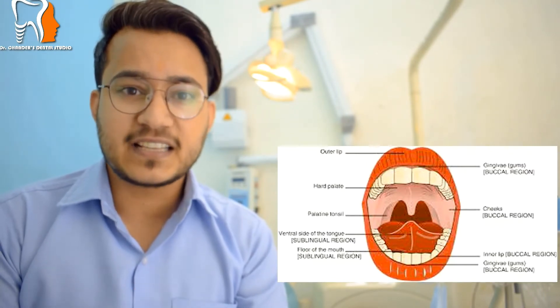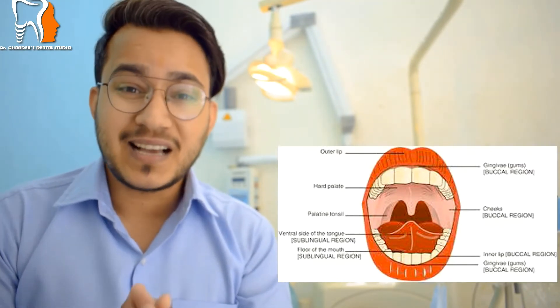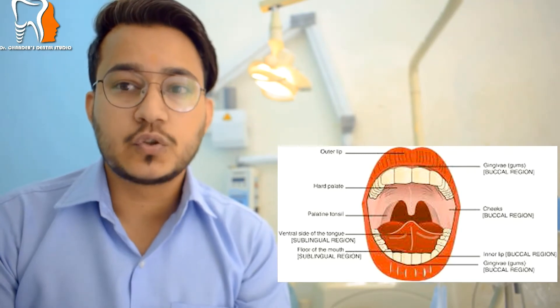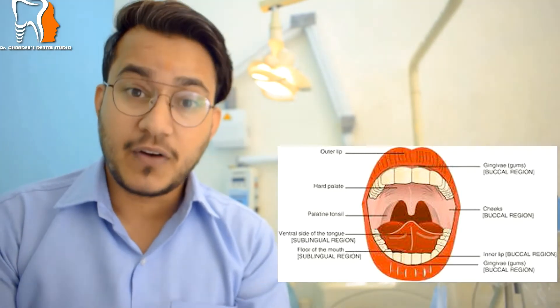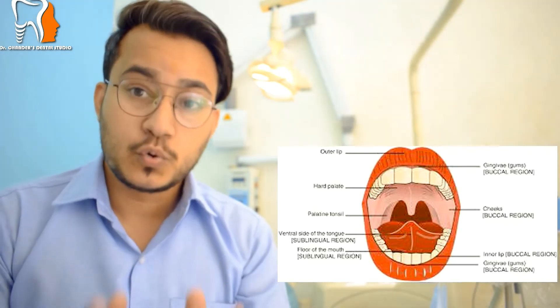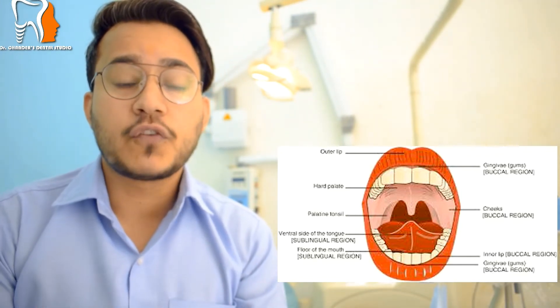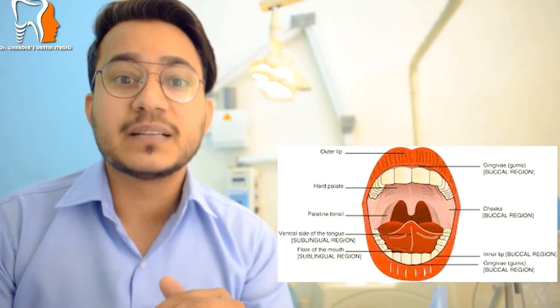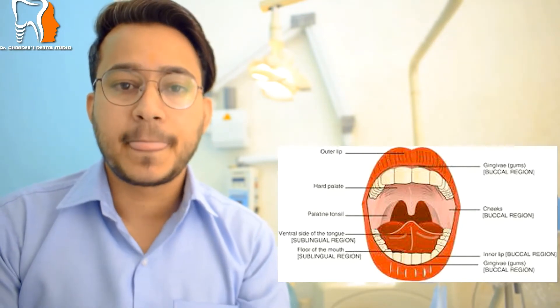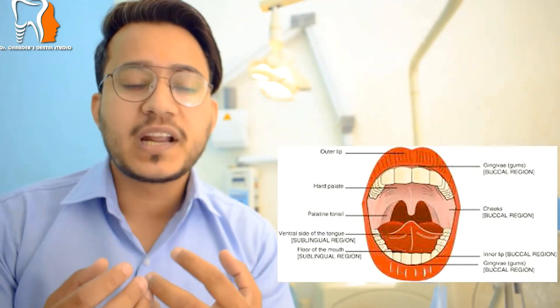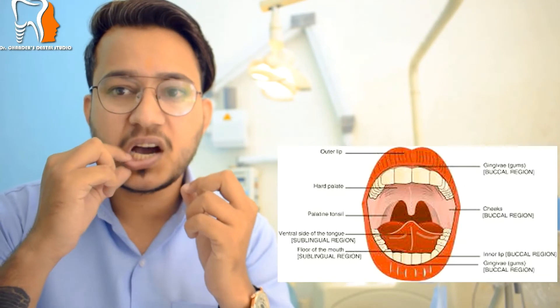Now let's talk about affected areas — the places where cancer can happen. The first area is the tongue, which is more likely to get cancer. Other affected areas include the lips, the palate, the floor of the mouth, and the throat. These are the areas where oral cancer is commonly seen.